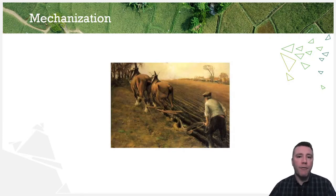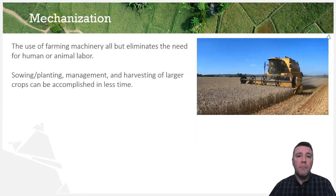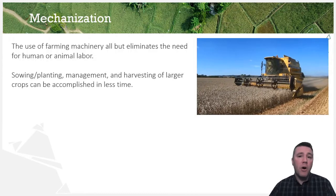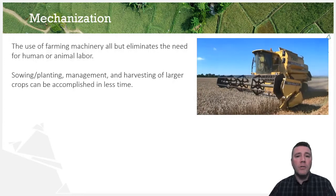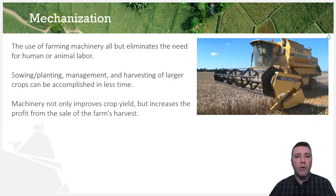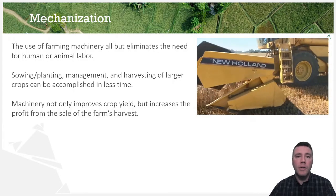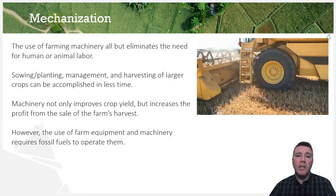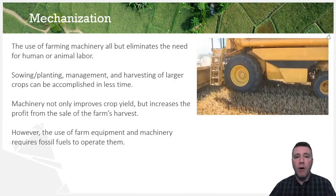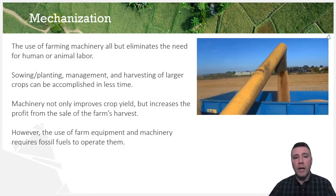Using machinery on a farm practically eliminates the need for animal and almost all human labor. Sowing, maintenance, management, and harvesting of crops can be done in much less time, improving both the yield of a crop and the profit from the sale of the harvest. However, using machinery does require fossil fuels, which increases the carbon footprint of the farm, produces carbon dioxide, and contributes to global climate change.